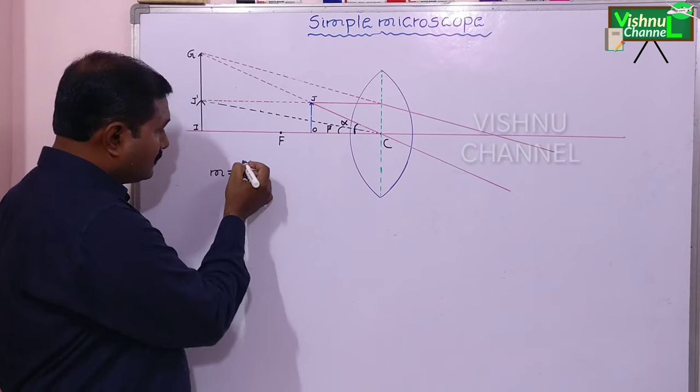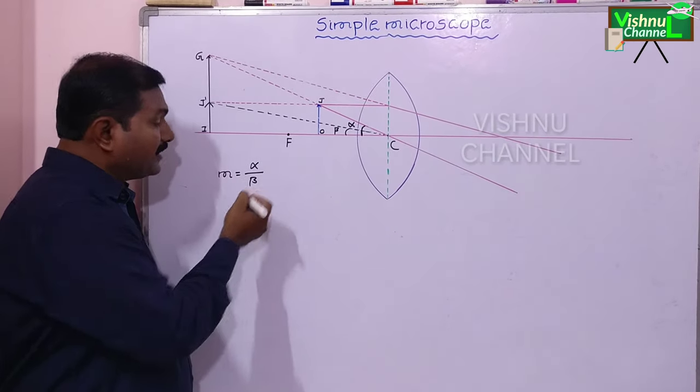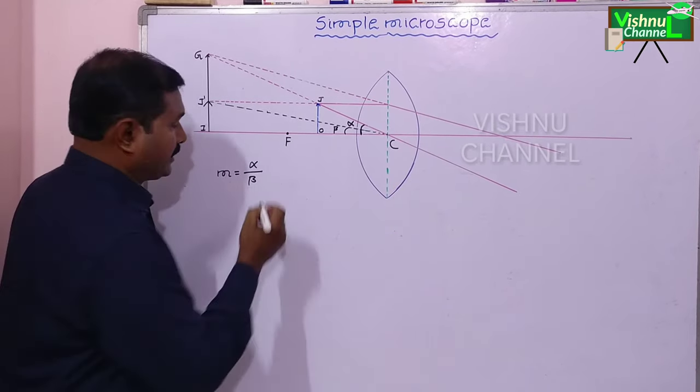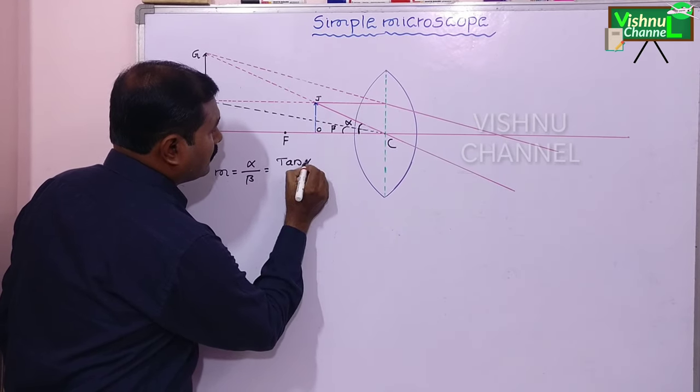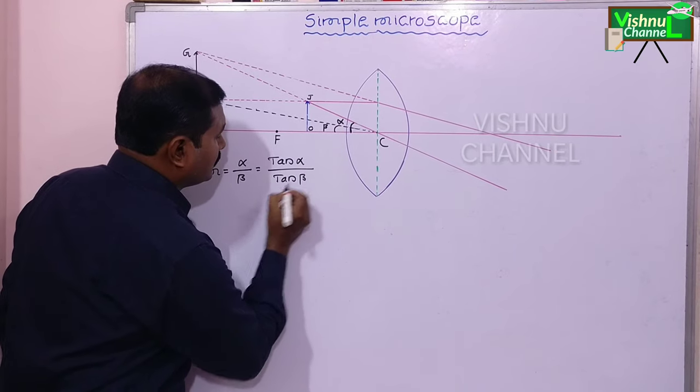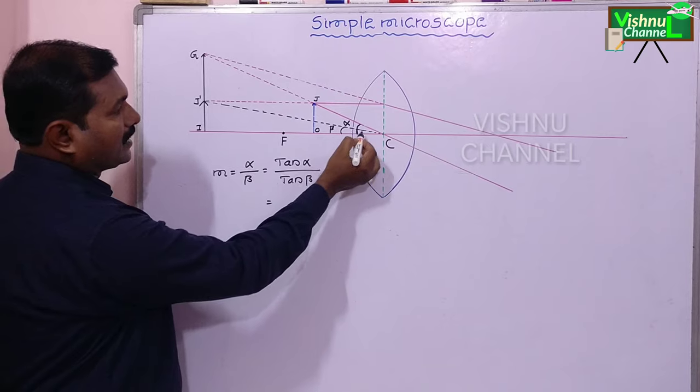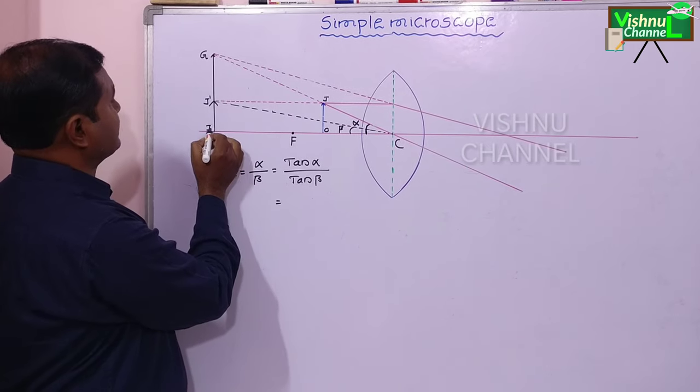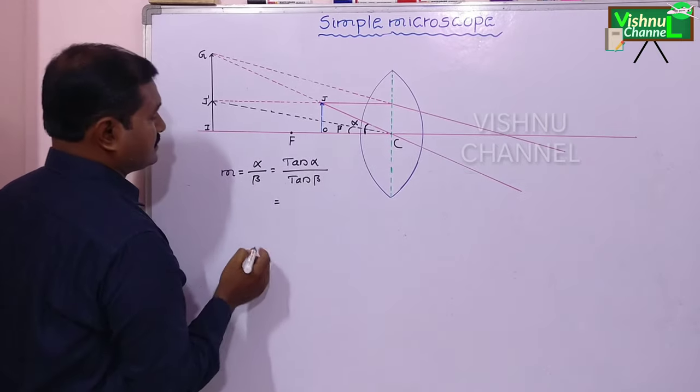For small angles, alpha value is approximately equal to tan alpha. Beta value is approximately equal to tan beta. So this is equal to tan alpha by tan beta. But from this diagram, tan alpha equal to opposite side IJ, adjacent side equal to IJ.